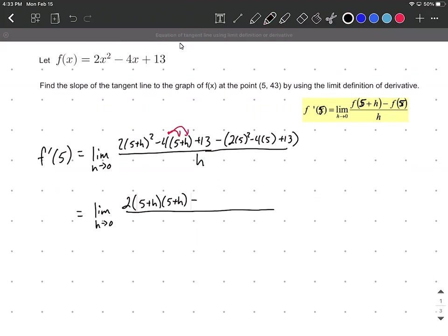So we get -20 - 4h + 13, minus the inside which simplifies to 2(25) - 20 + 13, which is 50 - 20 + 13, making -43 overall.